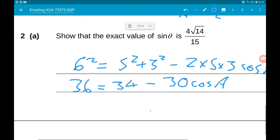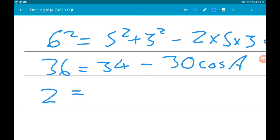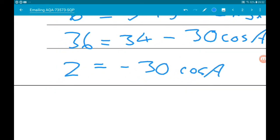Now if we take away the 34, then we get 2 is equal to minus 30 cos of A. Dividing by the minus 30 gives us cos of A is equal to minus 2 thirtieths, which is minus 1 fifteenth.